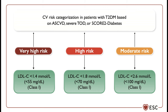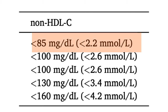The primary lipid target in patients with diabetes is LDL cholesterol: less than 1.4 mmol/L for very high-risk patients, less than 1.8 mmol/L for high-risk, and less than 2.6 mmol/L in moderate-risk patients. The secondary target is non-HDL cholesterol: less than 2.2 mmol/L in very high-risk and less than 2.6 mmol/L in high cardiovascular risk.